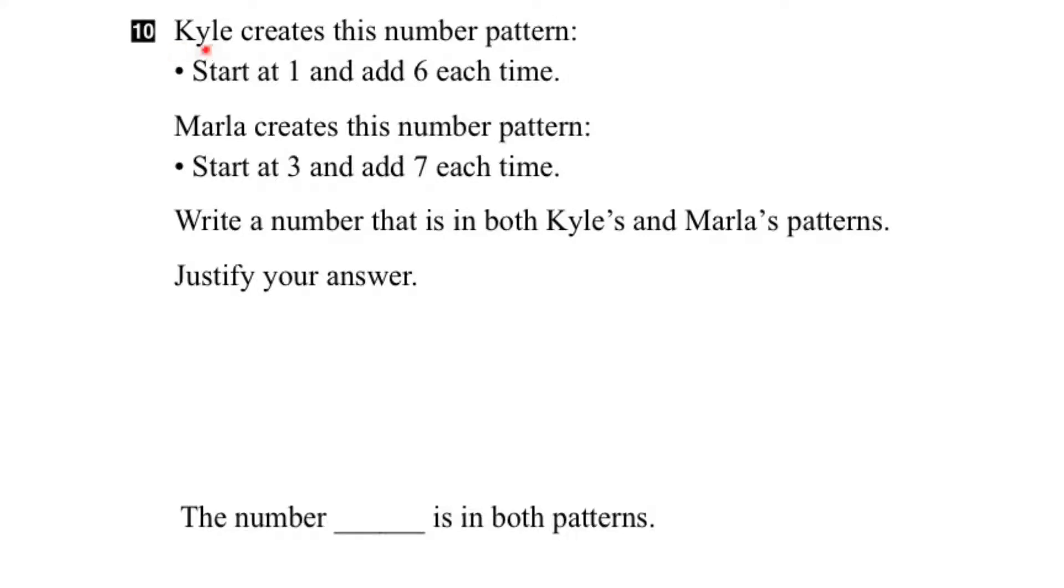In this question, we're told that Kyle creates a number pattern where he starts at 1 and adds 6 each time. And then Marla creates a number pattern starting at 3 and then adding 7 each time. And what we have to do is find a number that is both in Kyle's and Marla's patterns.